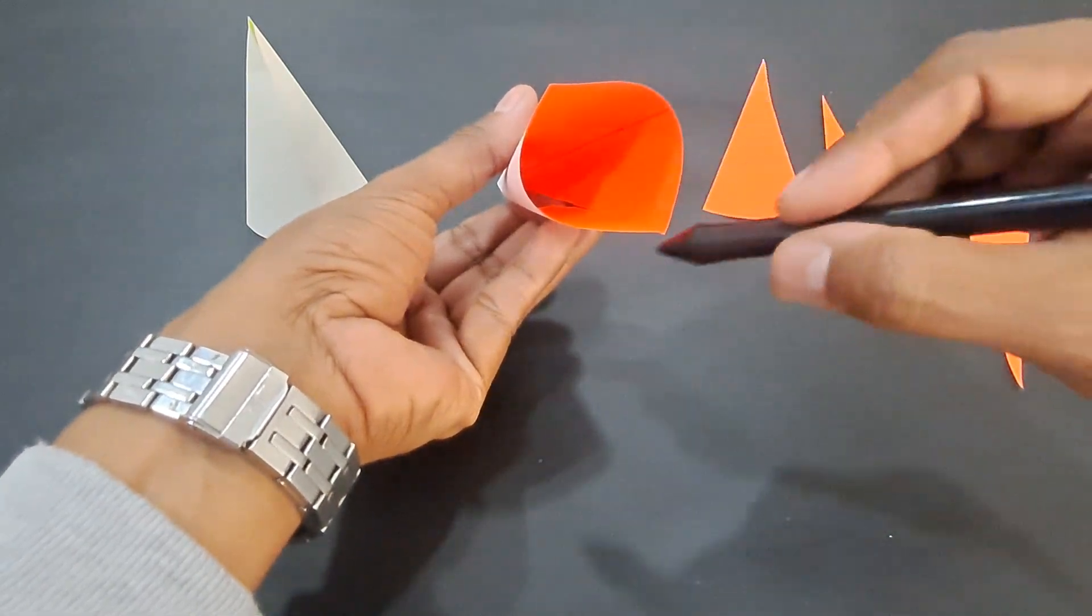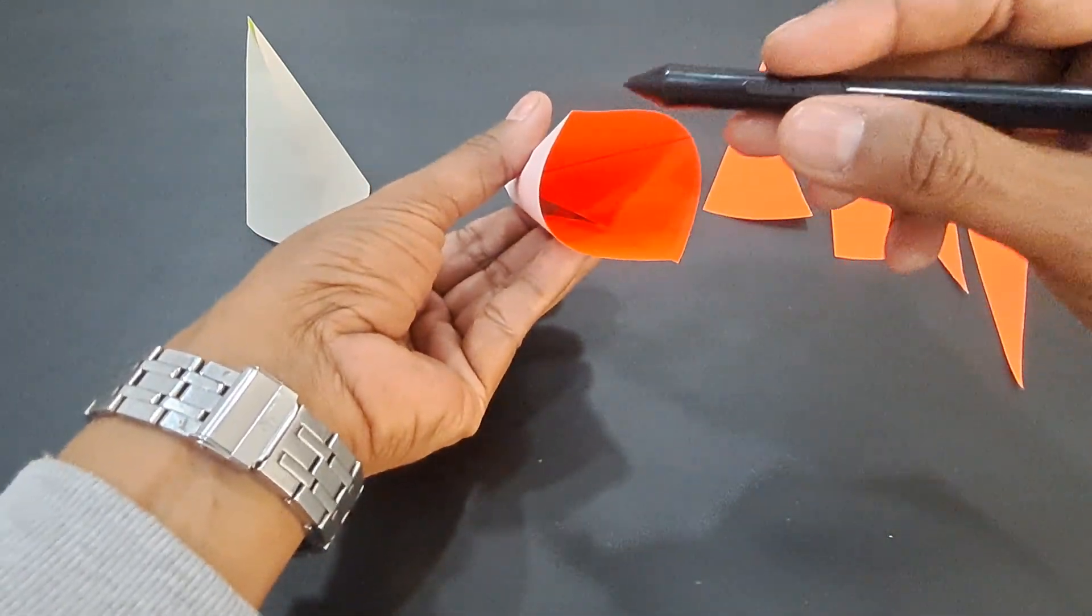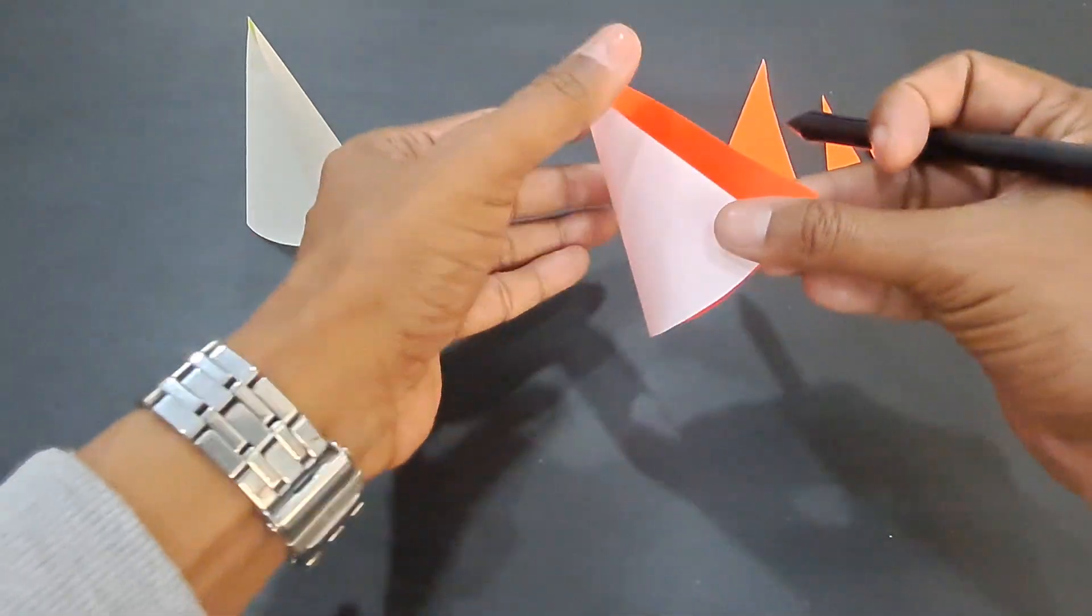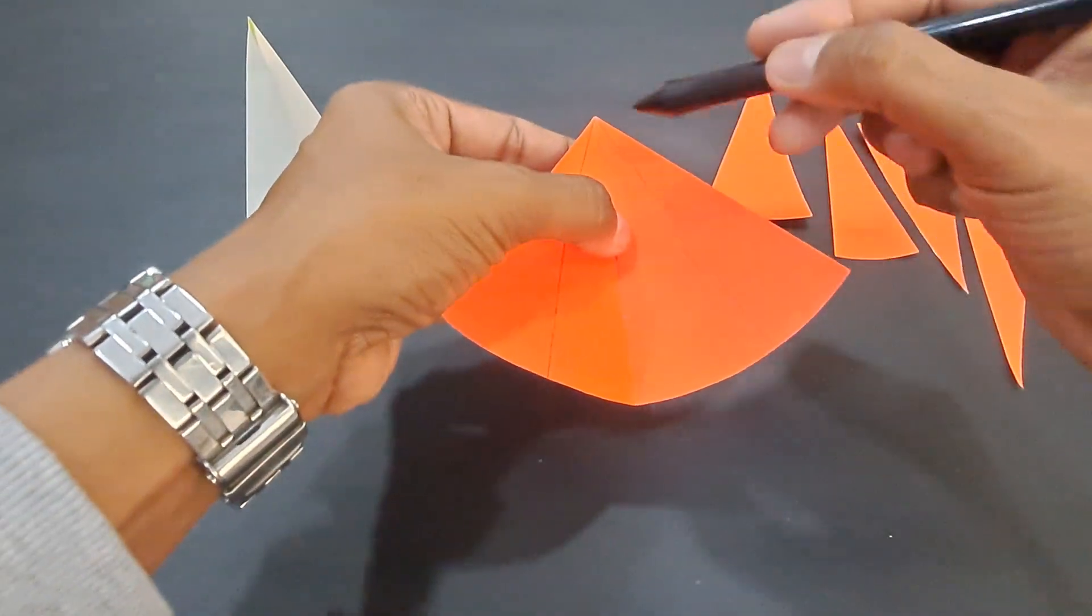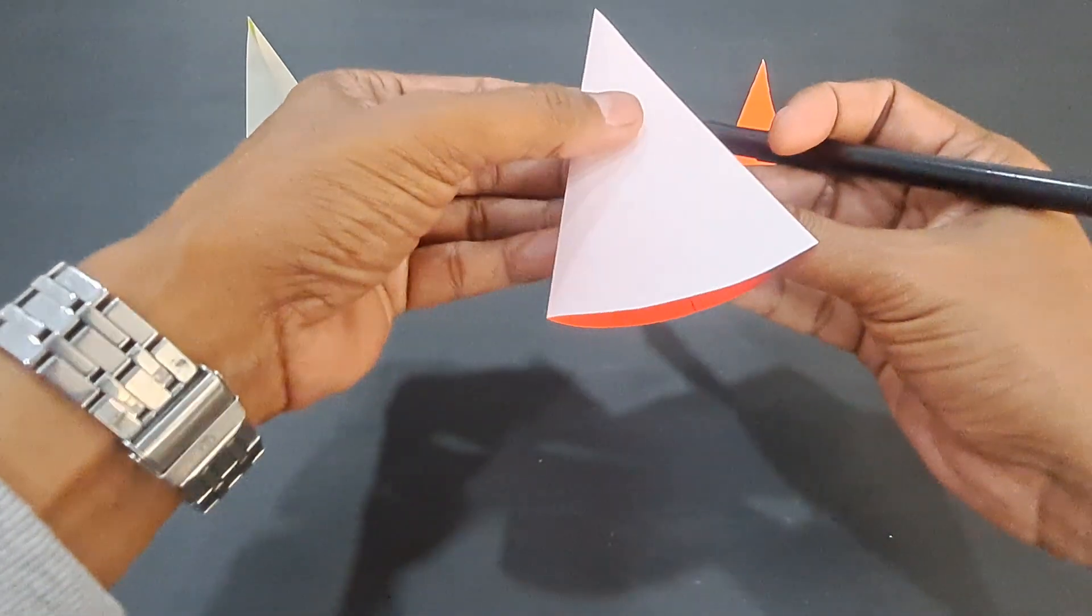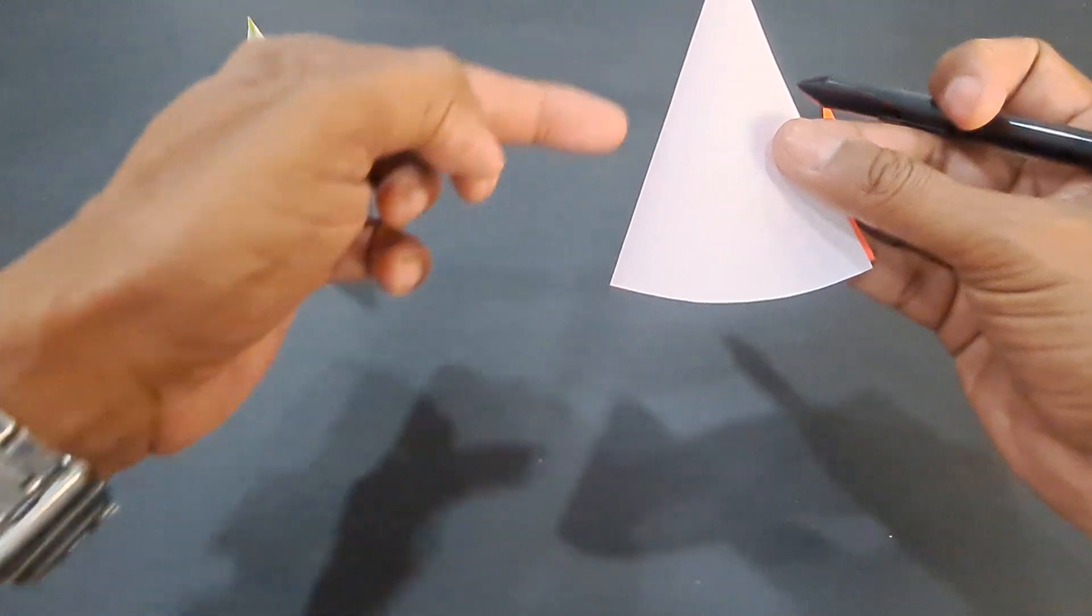Look at this. This gets converted to the base, and the radius of this sector gets converted into the slant height of the cone.